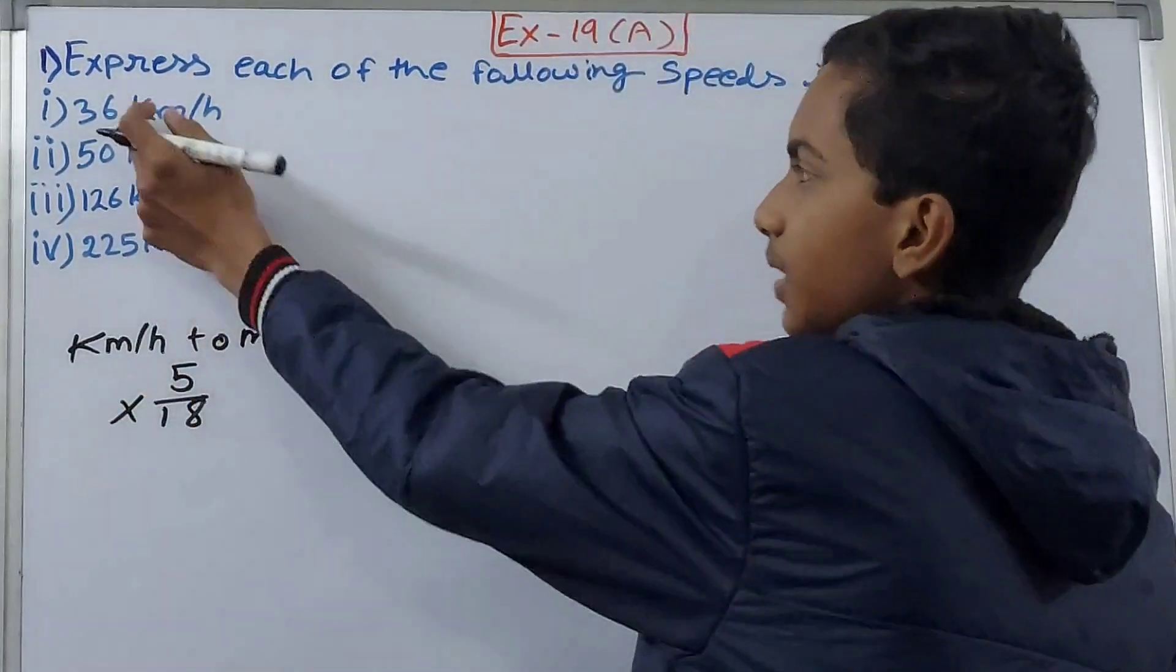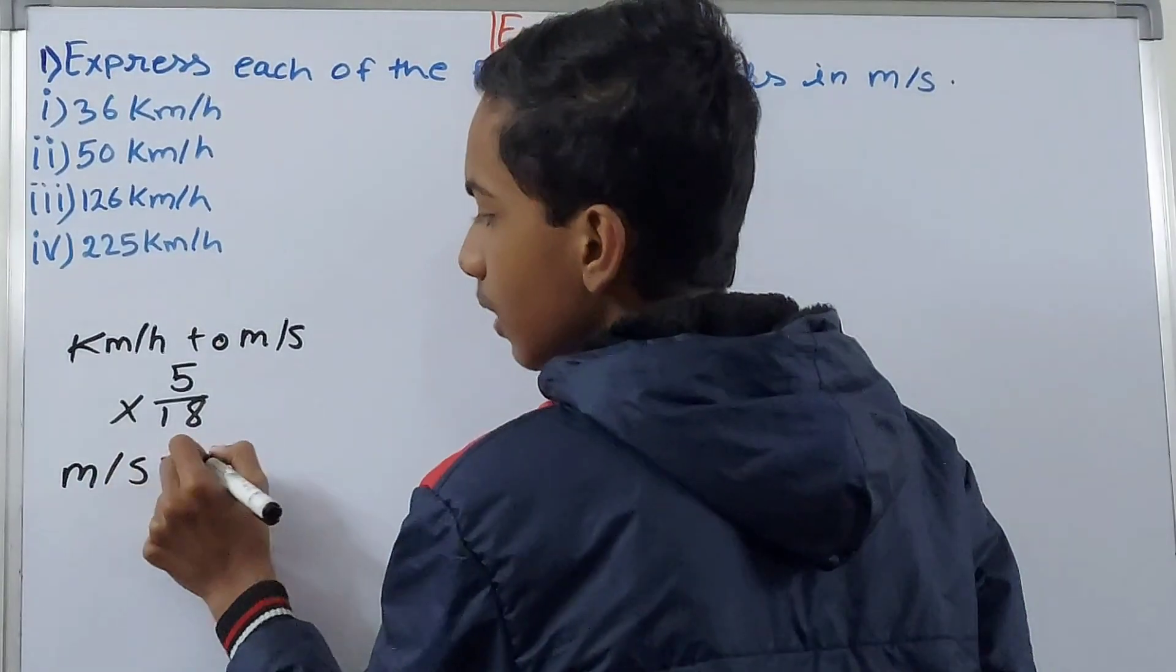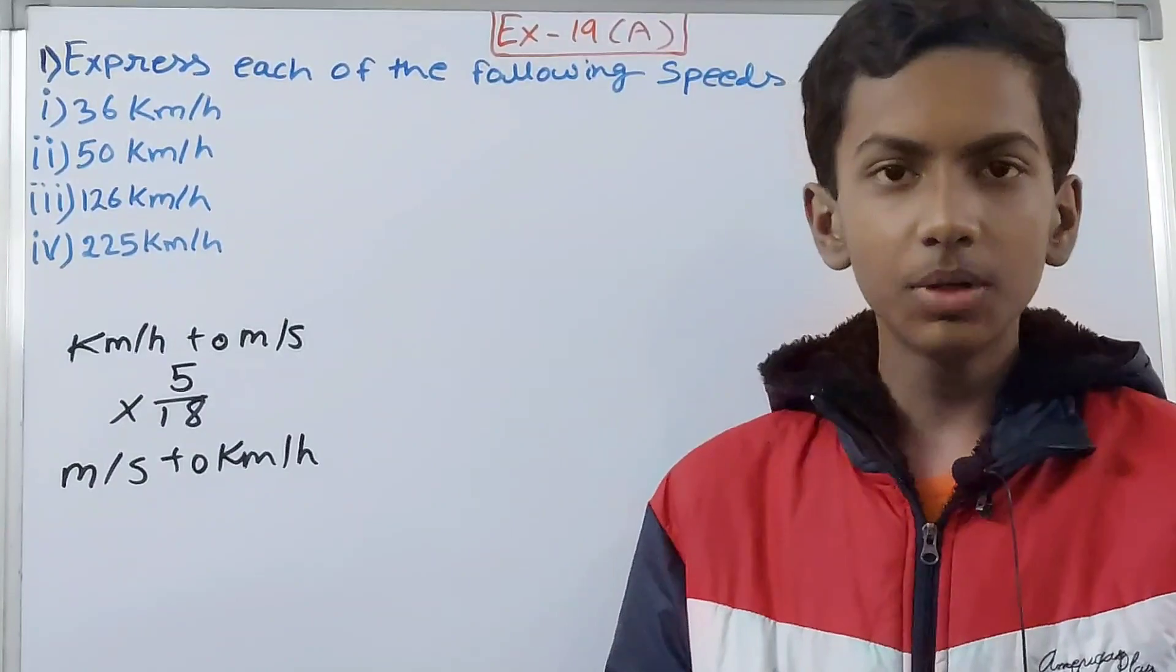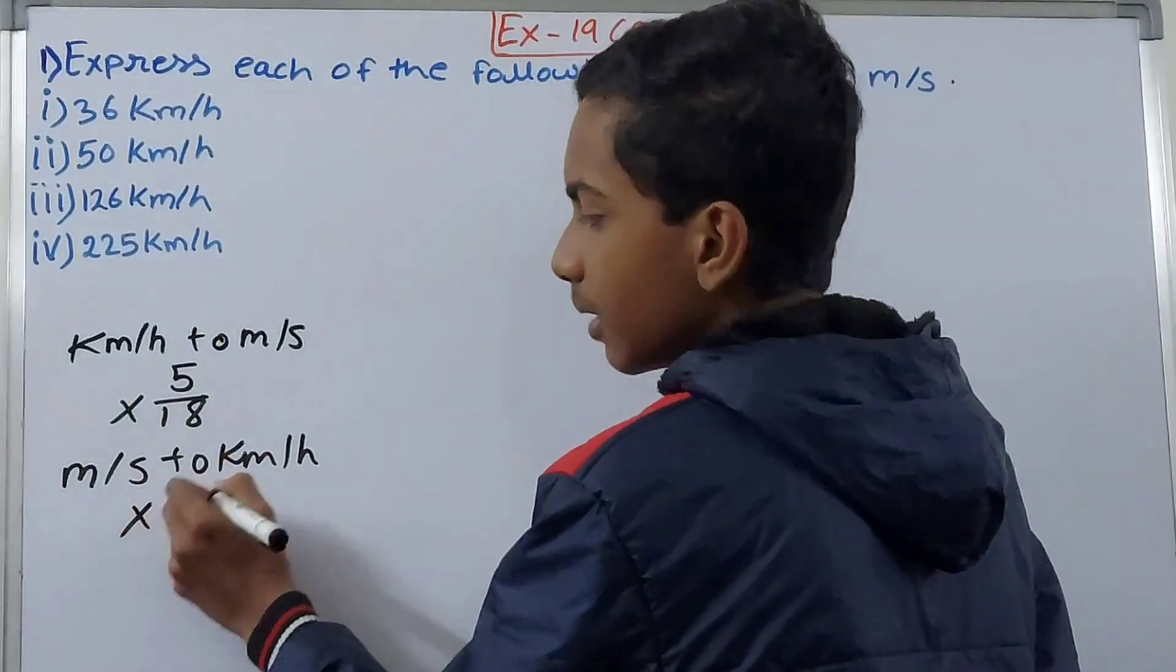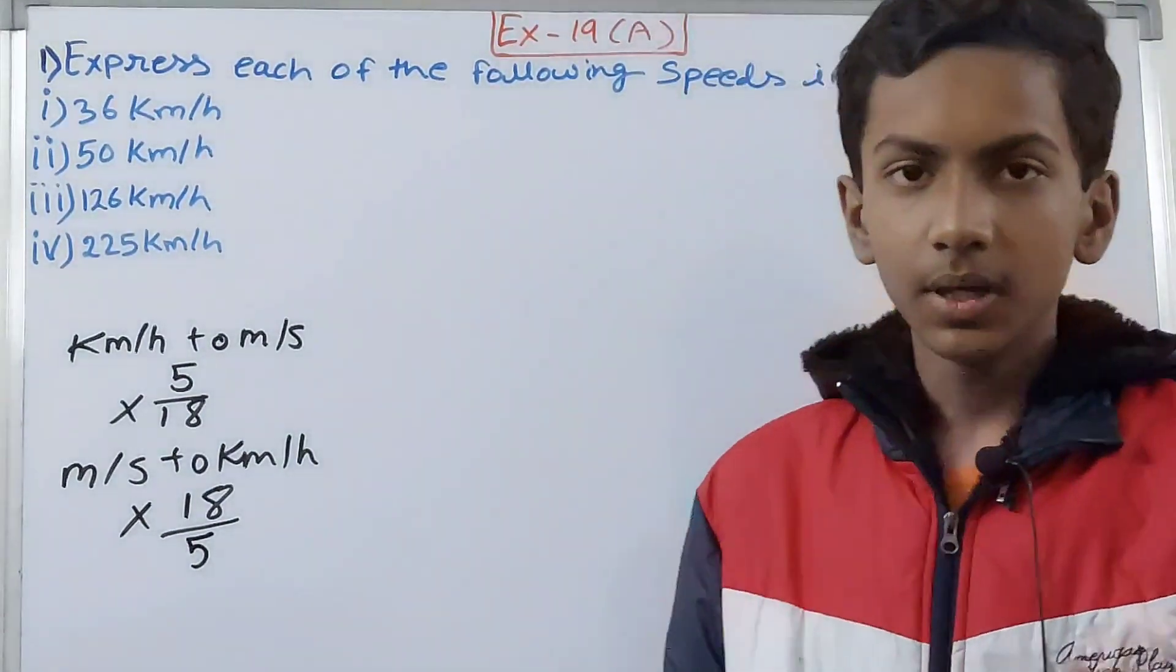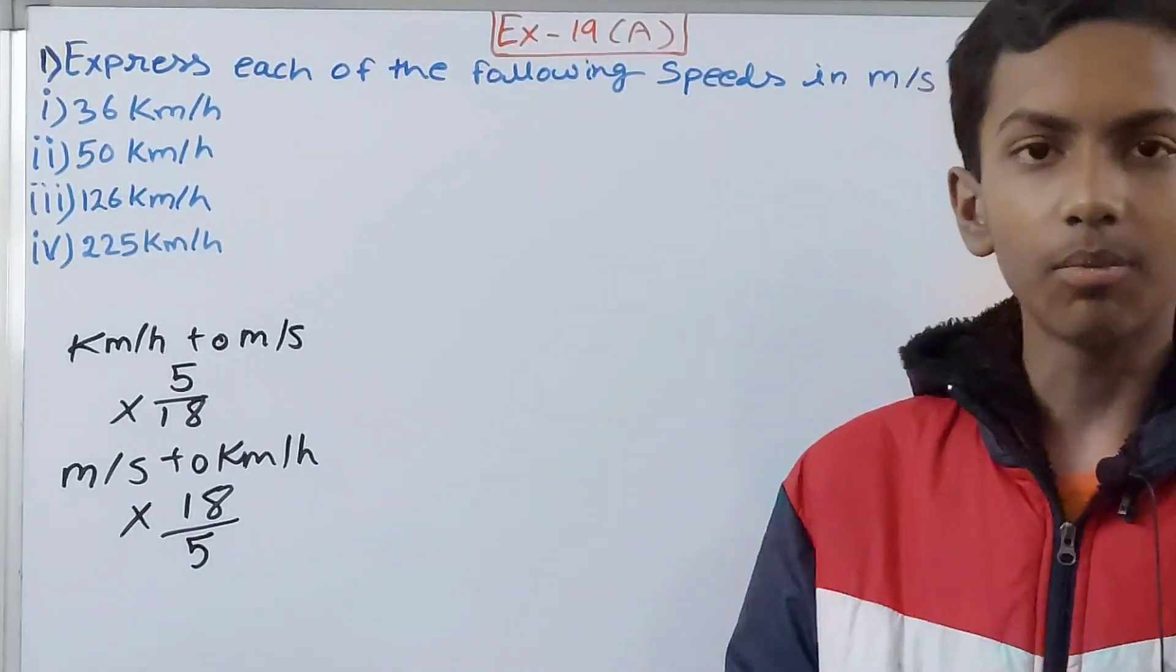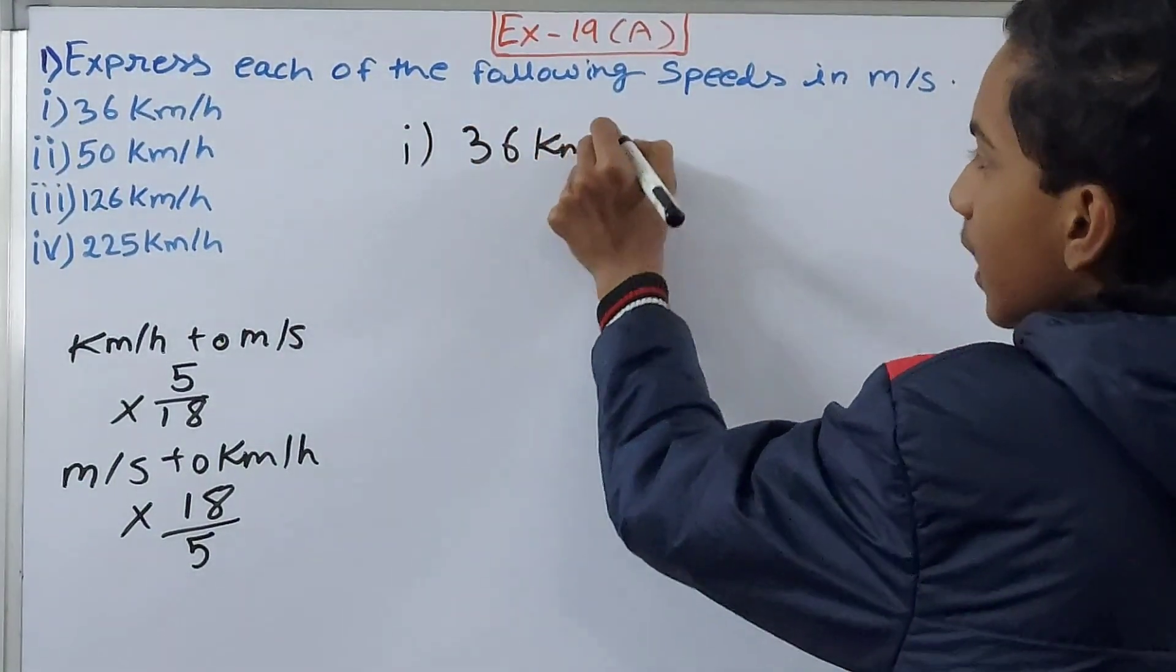If we are going from meter per second to kilometers per hour, just the opposite of this, the value will be changed. The numerator and denominator will be interchanged. From kilometer per hour to meter per second, multiply by 5 by 18. From meter per second to kilometer per hour, multiply by 18 by 5, just reciprocate the value.